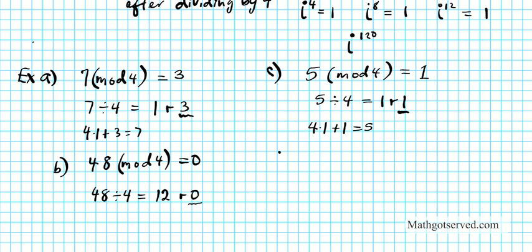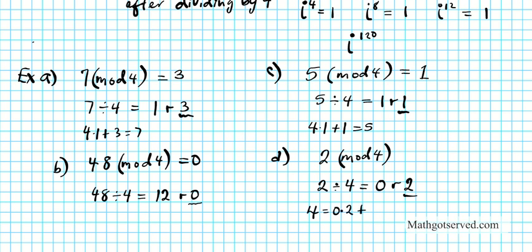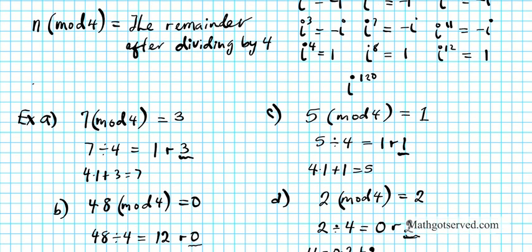One last modular arithmetic example. Example D: What is 2 modulo 4? This one is counterintuitive. When 2 is divided by 4, you have 0 whole numbers, remainder 2. Because 2 equals 4 times 0 plus 2. So since the remainder is 2, 2 modulo 4 equals 2. So n mod 4 is simply the remainder after you divide by 4.